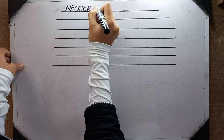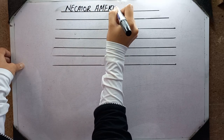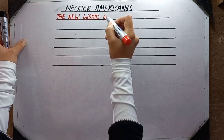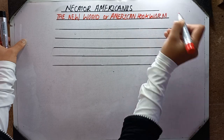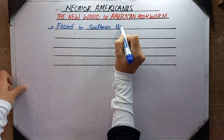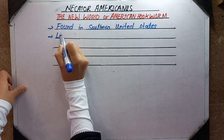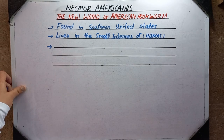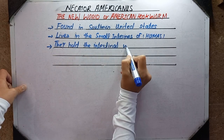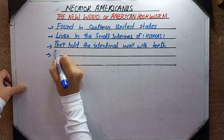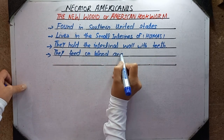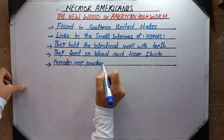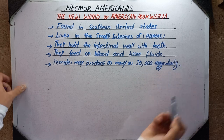In this lecture we are going to study the parasitic nematode Necator americanus, commonly called the hookworm or American hookworm. These hookworms are found in the southern United States and mainly live in the small intestine of humans. Humans are their only host. They hold the intestinal wall with their teeth and feed on blood and tissue. Females may produce as many as 10,000 eggs daily.